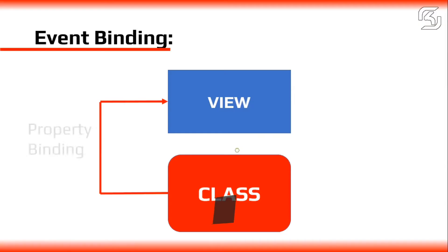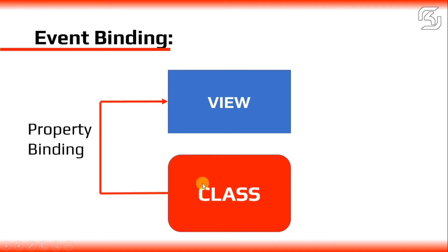We have a view of HTML template and a class. Now we will discuss style binding, class binding, and property binding. We will discuss the properties and values in the class and view. This is one-way binding — we will discuss the values flowing from the class to the view.